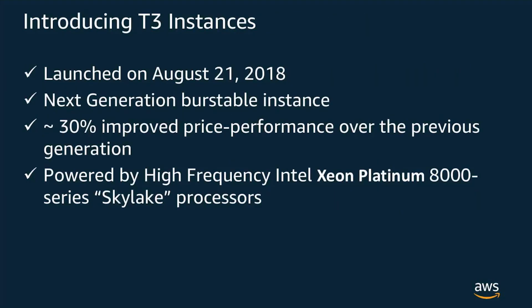T3 is the newest generation general purpose burstable instance family. It is a successor to T2 and was launched on August 21st this year. T3 offers roughly about 30% better price to performance over the previous generation T2 instances. They are powered by high frequency Intel Xeon processors based on Intel's new micro-architecture called Skylake.